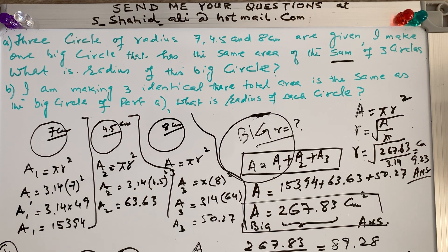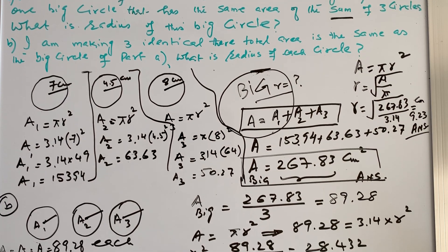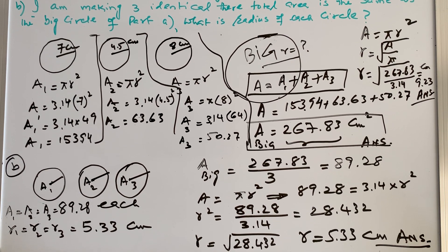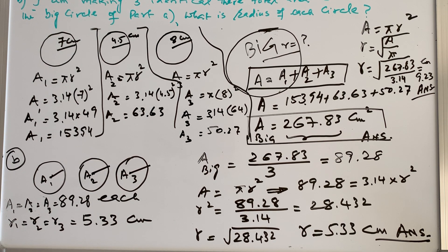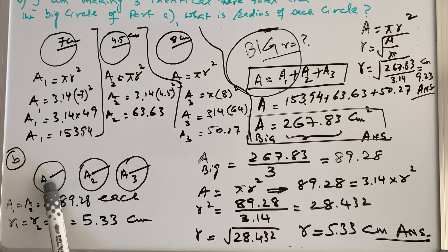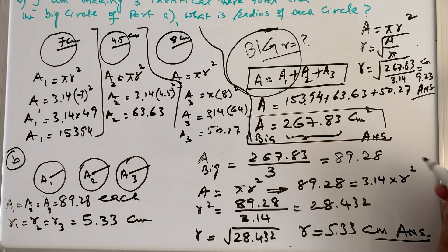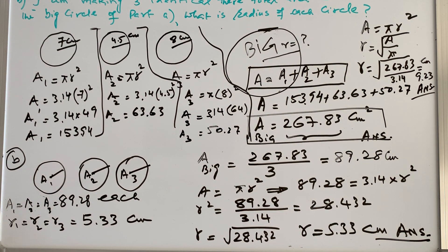For part B, I'm making three identical circles whose total area equals the big circle area. Dividing the big circle area by three gives each circle's individual area: 89.28 centimeters squared. Using the formula area equals pi r squared, substituting pi as 3.14 and area as 89.28, I calculate r equals 5.33 centimeters. That is the radius of each identical circle.